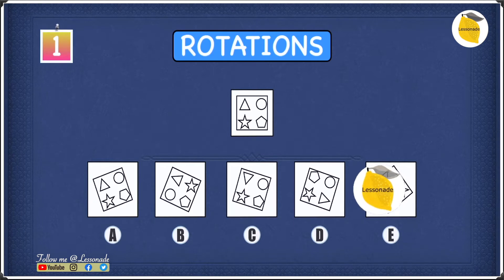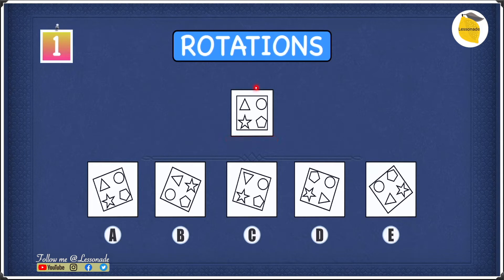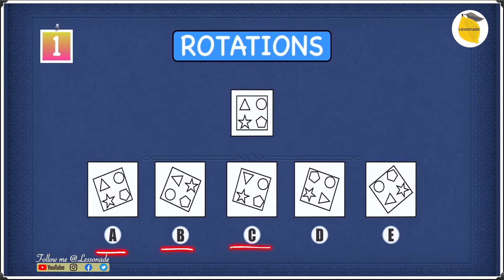Let's have a look at this example. We have a question figure and this question figure can be rotated at any angle and in any direction. It can be rotated clockwise or anti-clockwise. Our job is to find which one of the options is a rotated form of the question figure.